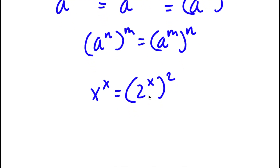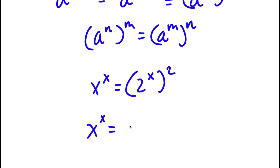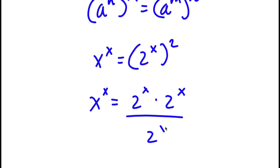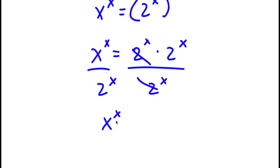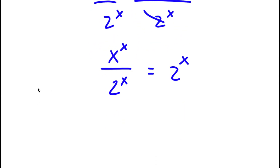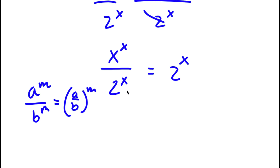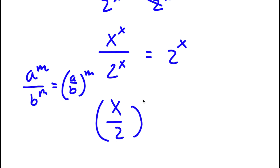Now, 2 to the power of x squared I'm going to rewrite as 2 to the power of x times 2 to the power of x. So on both sides, I'm going to divide by 2 to the power of x. These two cancel out, and now I'm left with x to the power of x over 2 to the power of x is equal to 2 to the power of x. Using the rule a to the power of m over b to the power of m equals (a over b) to the power of m, this becomes (x over 2) to the power of x, which equals 2 to the power of x.